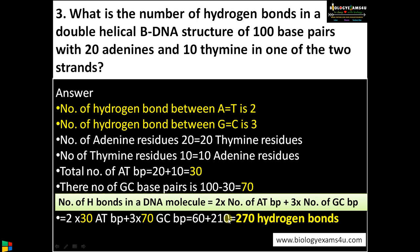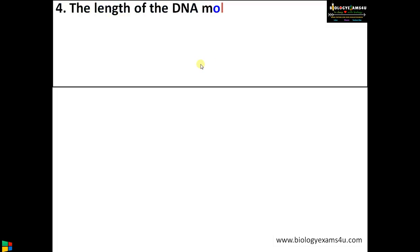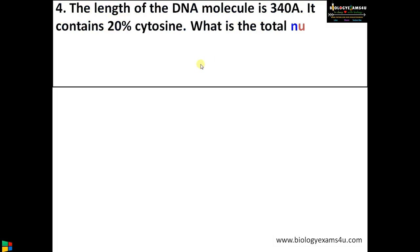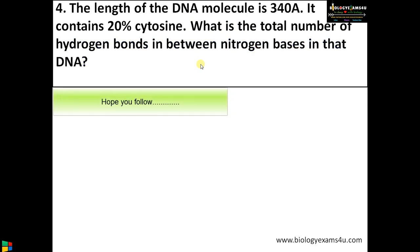This question is somewhat similar to the first question but the wording is slightly different — here it gives 20 adenine and 10 thymine residues separately. Now the final question: the length of a DNA molecule is 340 angstroms and it contains 20% cytosine. What is the total number of hydrogen bonds between the nitrogenous bases in that DNA?